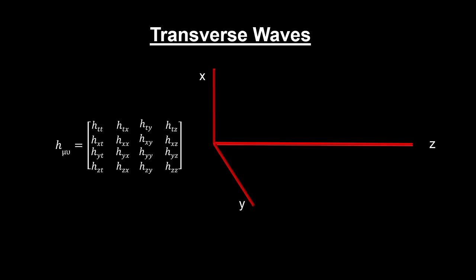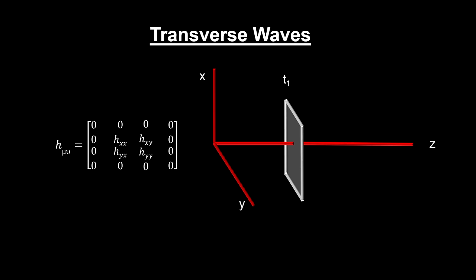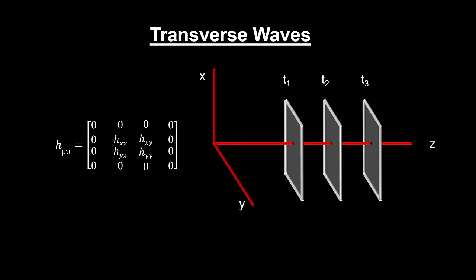As a wave moves down the z-axis, planes at different times experience different values for the metric used to measure distance on the plane. This makes the wave a transverse wave, just like light.